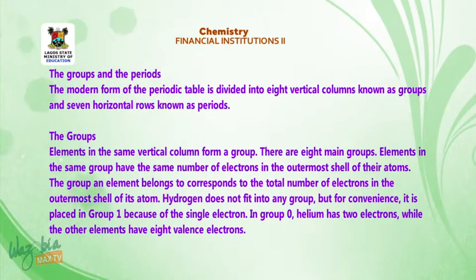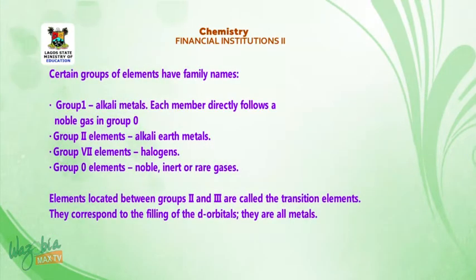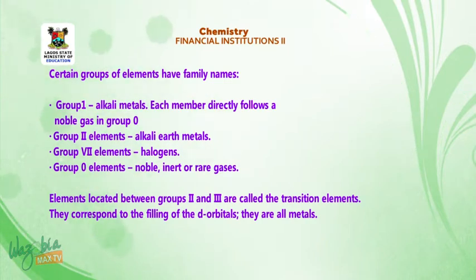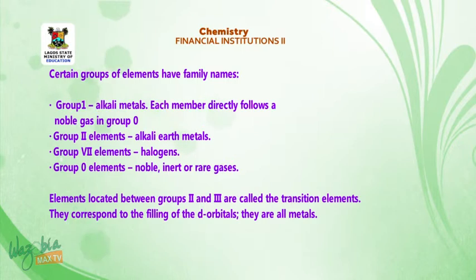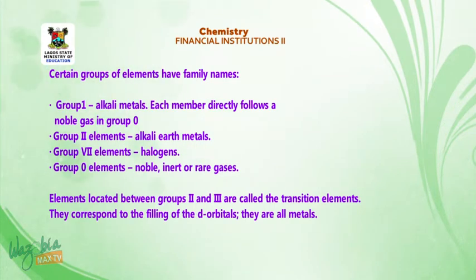In group 0, helium has 2 electrons while the other elements have 8 valence electrons. Certain groups of elements have family names. Group 1 elements are called alkali metals; each member directly follows a noble gas in group 0. Group 2 elements are called alkali metals. Group 7 elements are called halogens. Group 0 elements are called noble, inert, or rare gases. Elements located between groups 2 and 3 are called the transition elements; they correspond to the filling of the d orbitals and are all metals.